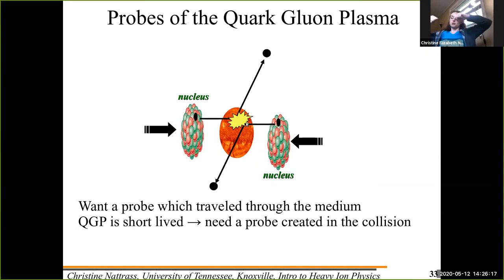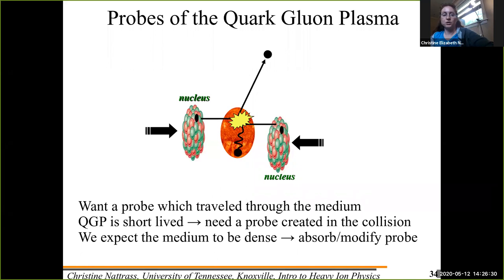So what you do instead is that you use an internal probe. And the probe that I'm going to talk about is something called jets. So you have a quark or a gluon in one nucleus, and it hits a quark or a gluon in the other nucleus. And the majority of these collisions are what we call two to two, meaning that you have a quark or a gluon come in and they scatter off of each other and you end up with two quarks or gluons going out.